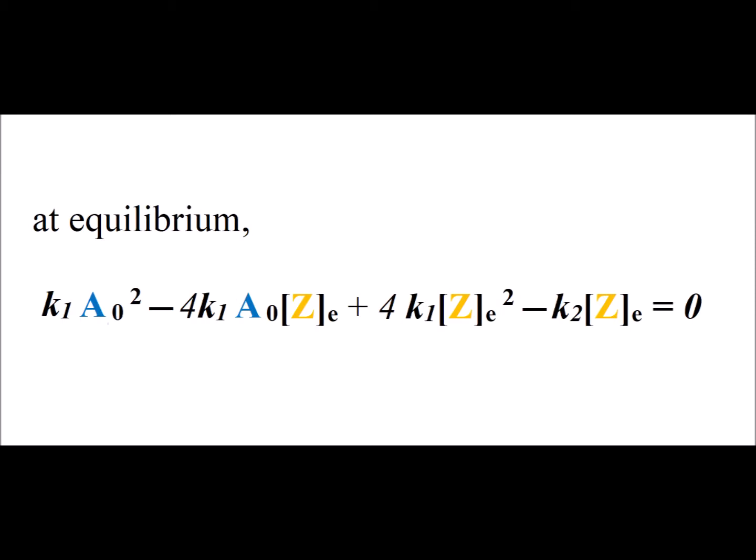At equilibrium, we know that the rates of the forward reaction and the reverse reaction are going to be equal to each other. And we know that the relevant concentration for Z is going to be its equilibrium concentration, thereby giving the expression shown.